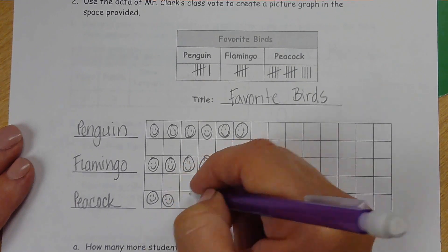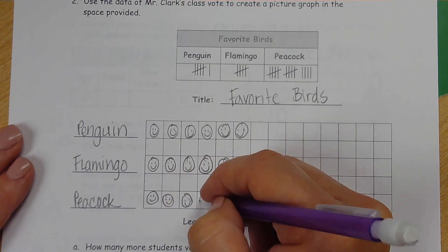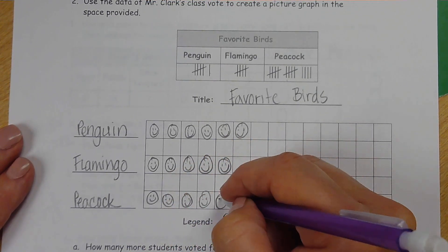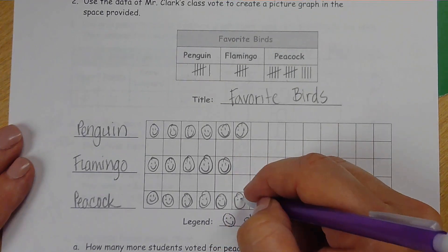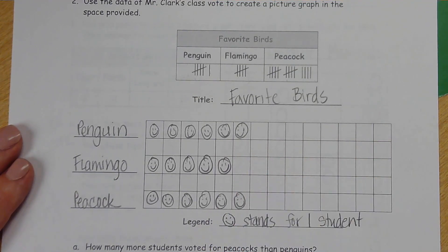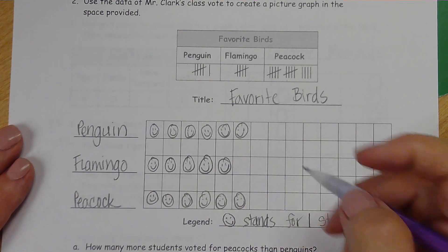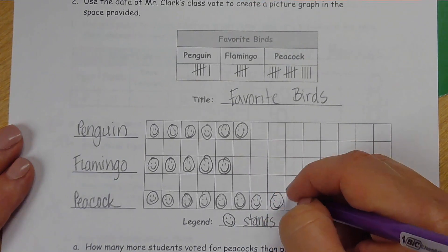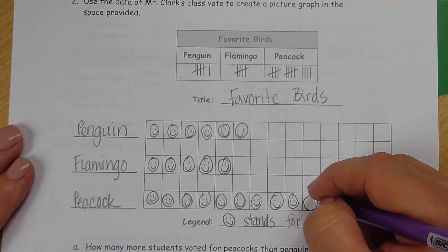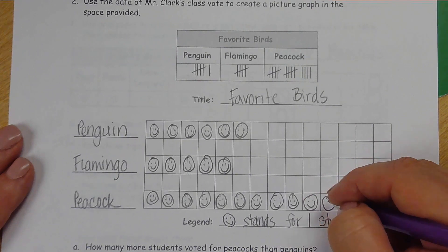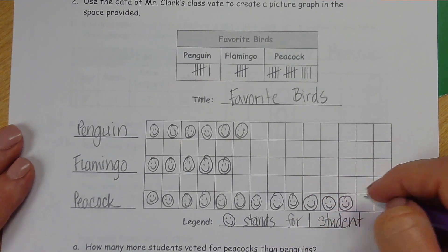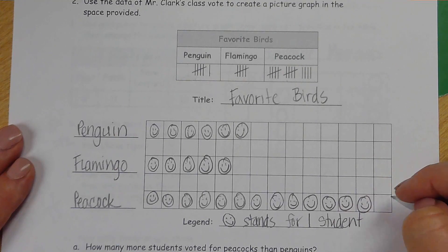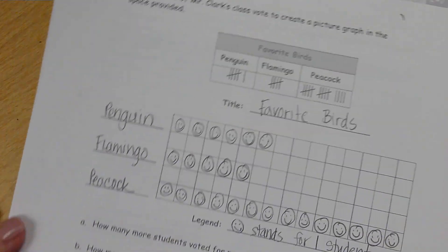One, two, three, four, five, six. If you're not having enough room to put faces in there, you can still just do circles. It's okay. Seven, eight, nine, ten, eleven, twelve, thirteen, fourteen. Now we're going to answer some questions based on our picture graph. If you need to pause to catch up, that's okay.